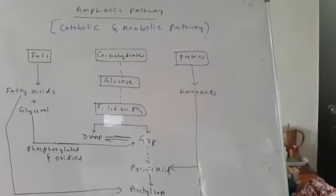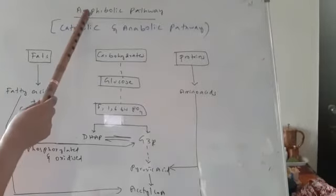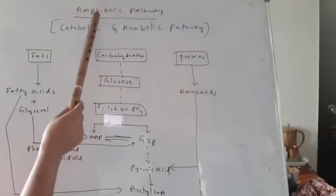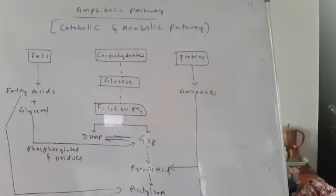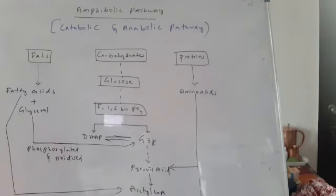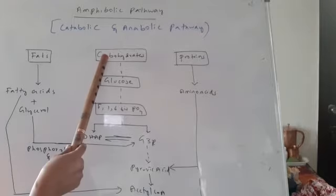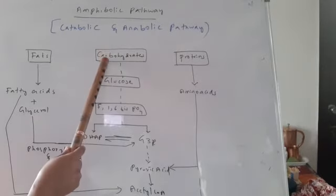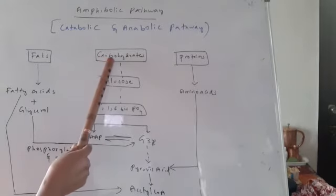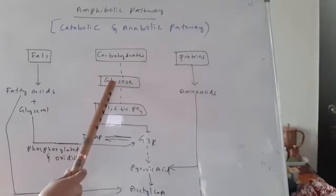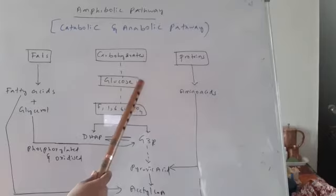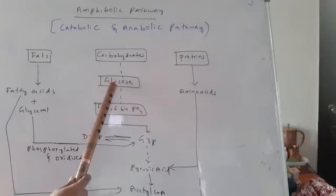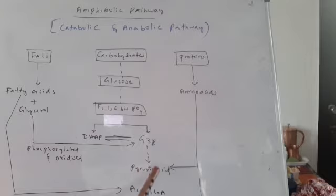In this class we will discuss why respiration is called an amphibolic pathway. The respiratory pathway is also called an amphibolic pathway because, imagine if the cell requires energy, the carbohydrates are broken down to release glucose. Carbohydrates are the common respiratory substrates, and glucose enters into the glycolysis pathway where it is converted into pyruvic acid.